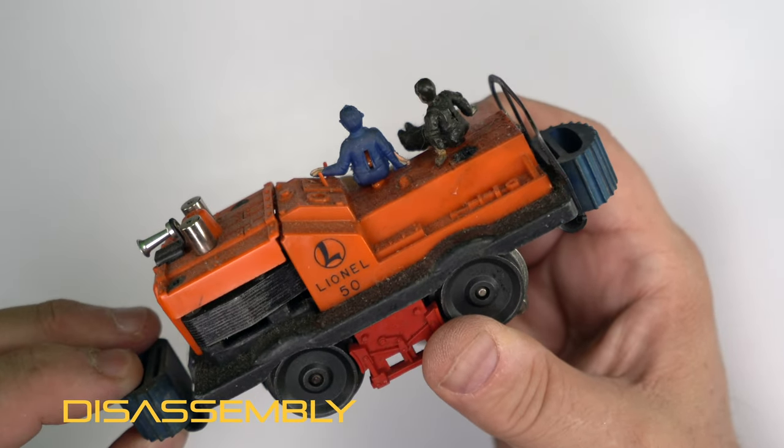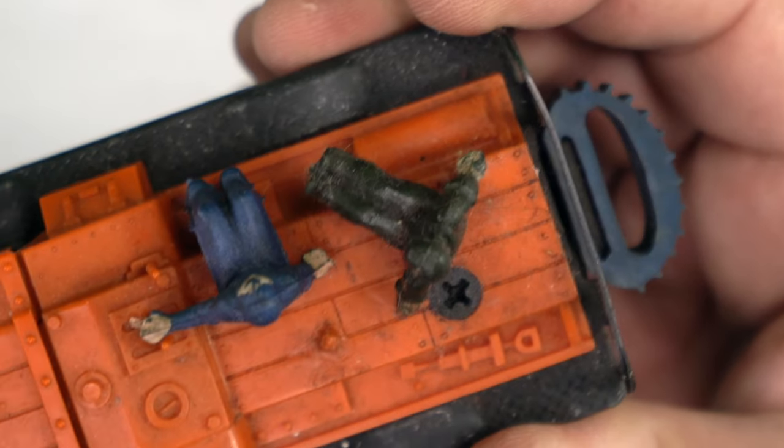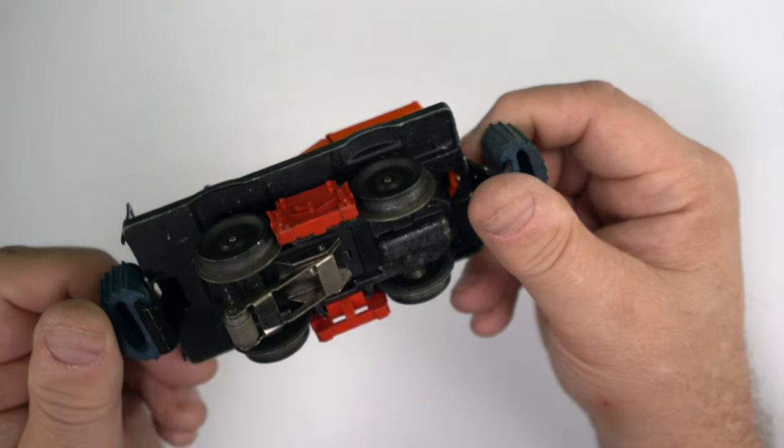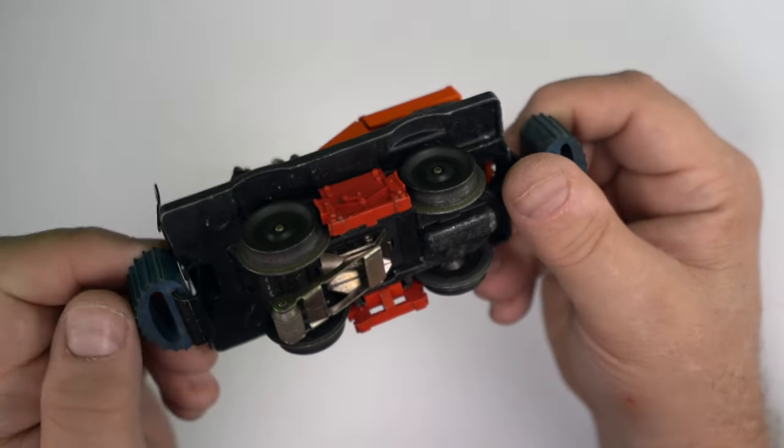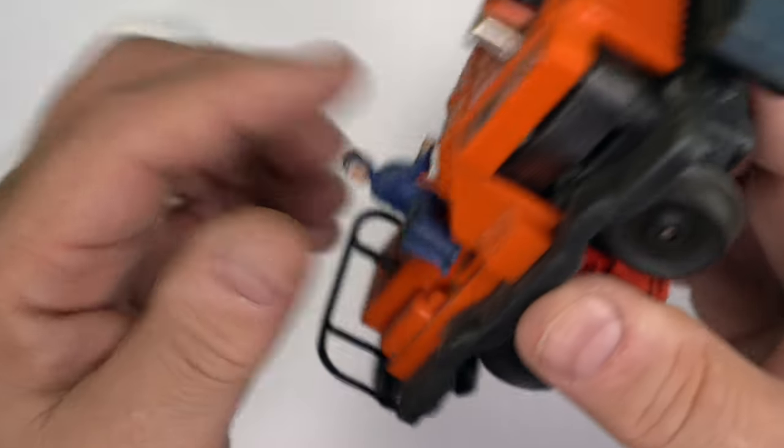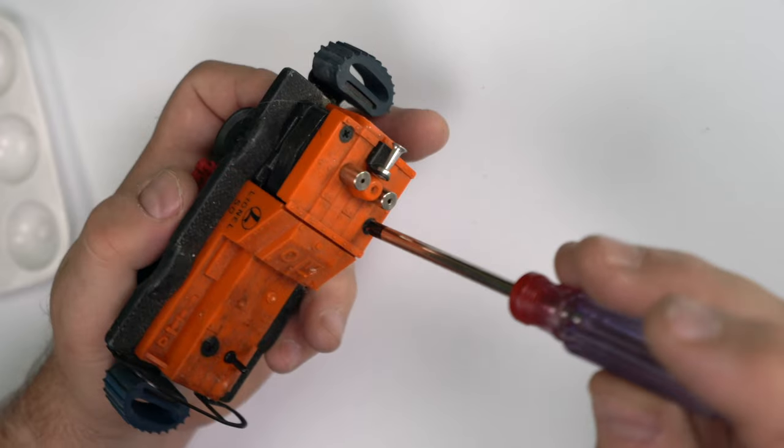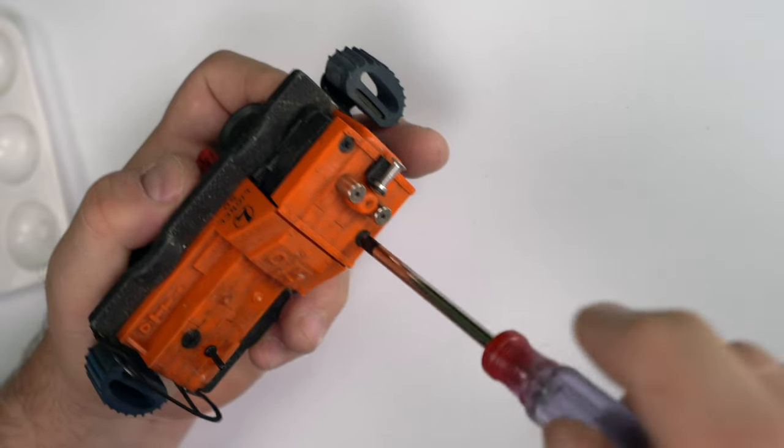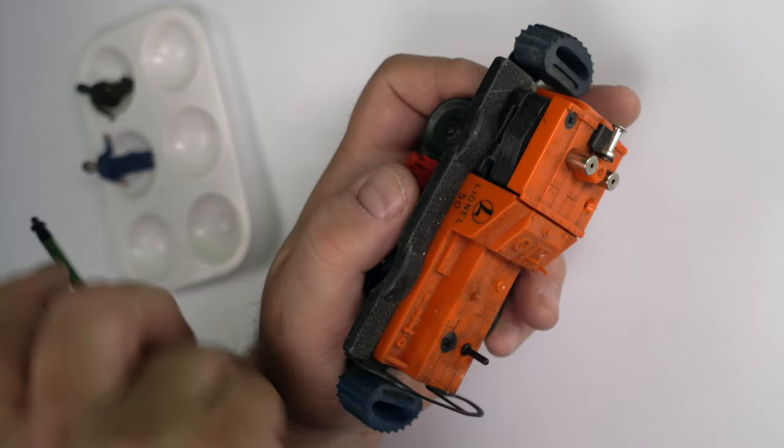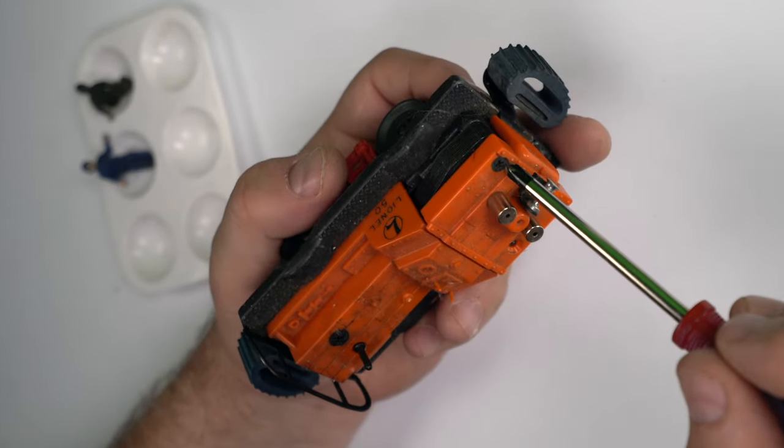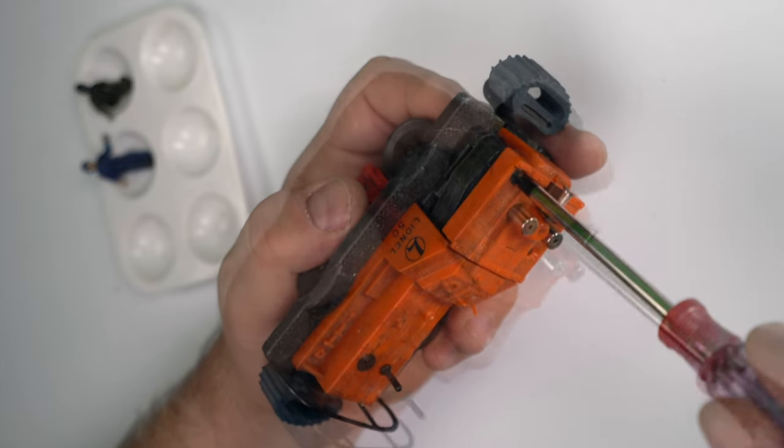Today we're going to look at one of these crazy Lionel Model 50 gang cars. This thing never really existed. There are gang cars, but nothing looked like this. It's one of those Lionel products that when you had it as a kid, you loved it. You crashed it through bridges and other trains. And then when you get a little bit older, you wonder, what in the world did I see in this thing?